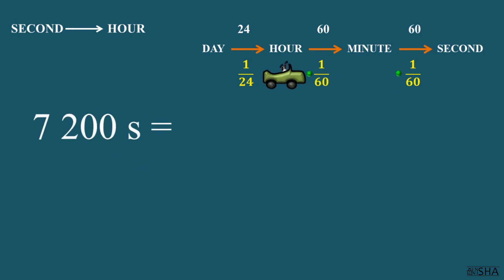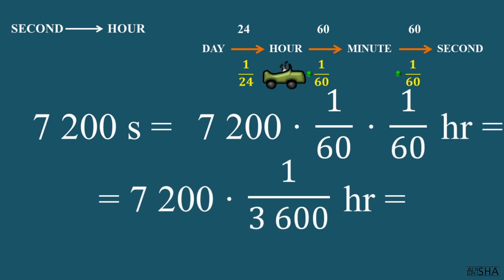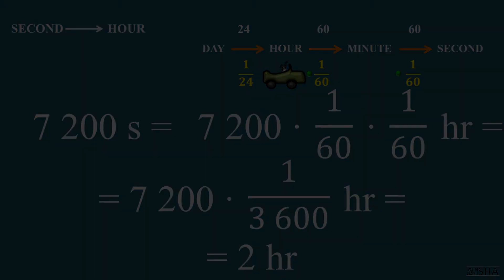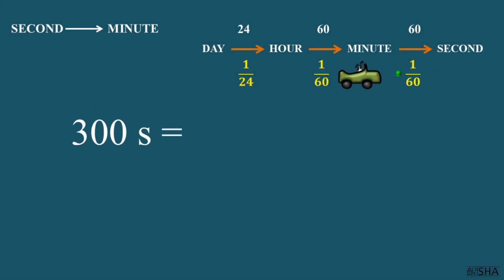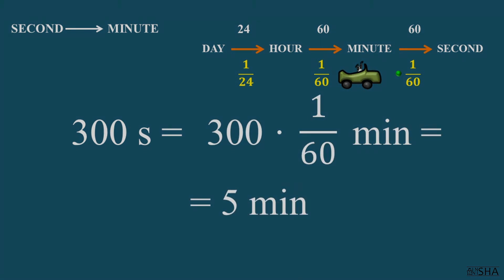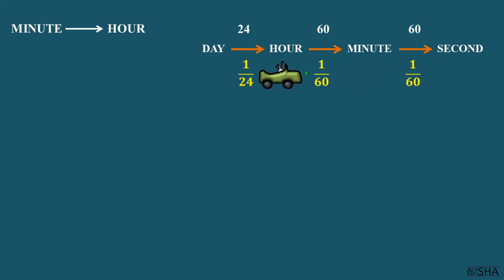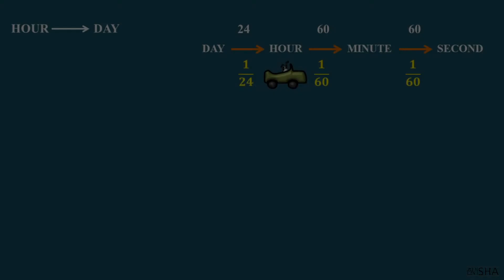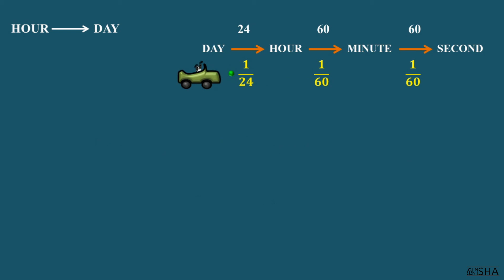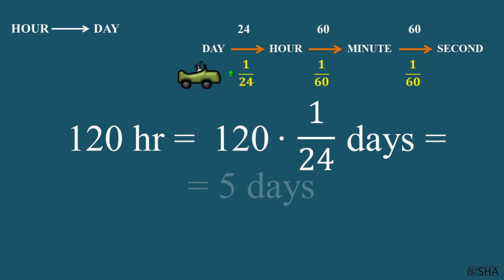7200 seconds convert to hours. So 7200 must be multiplied by 1/3600. Equals 2 hours. Convert 300 seconds into minutes. 300 must be multiplied by 1/60th. We get 5 minutes. Convert 600 minutes to hours. Let's multiply 600 by 1/60th. This is equal to 10 hours. 120 hours need to be converted to days. So 120 is multiplied by 1/24th. Thus we get 5 days.